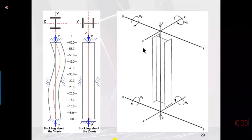Overall buckling takes place when the slenderness ratio is large. For compression members, AISC recommends that the overall slenderness ratio should not exceed 200. For an I-section of a given length, the length and boundary conditions about the x and y directions may be the same if the boundary conditions are identical about both axes.